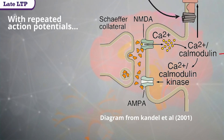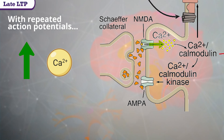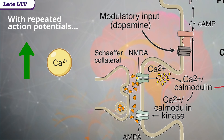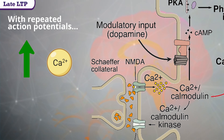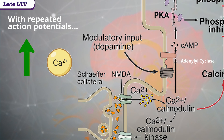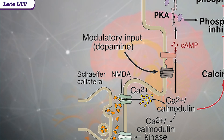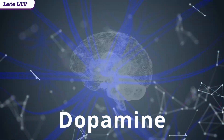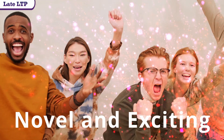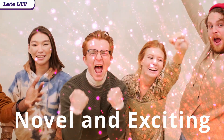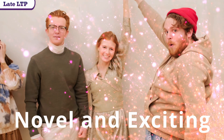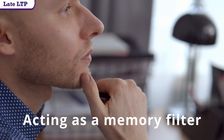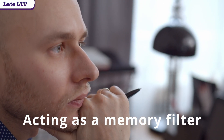With repeated action potentials and additional calcium that follows, calmodulin along with the modulatory input dopamine will stimulate G-coupled protein receptors to activate adenylyl cyclase. Adenylyl cyclase catalyzes the production of cyclic AMP, leading up to late phase LTP through activating protein kinase A. The brain uses dopamine as a modulatory input — therefore, the more novel and exciting an event or memory is, the more likely it is to undergo LTP, strengthening that memory. Dopamine can actually stop you from remembering every single little thing, allowing you to remember only things of importance or value.